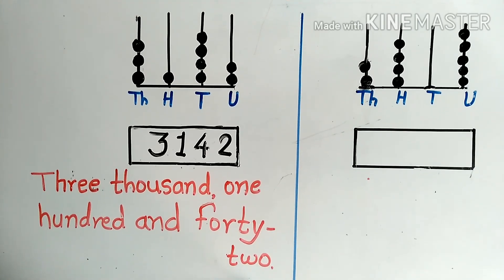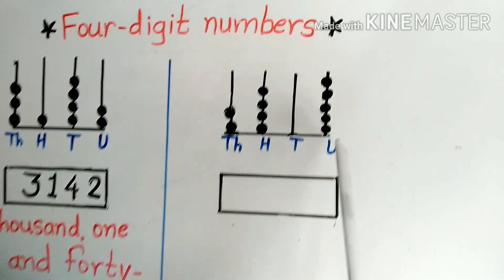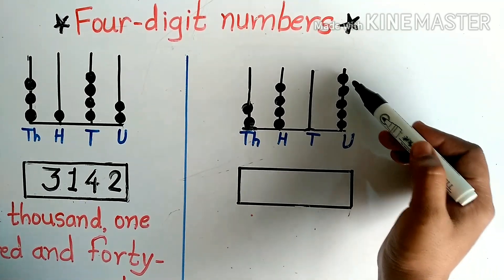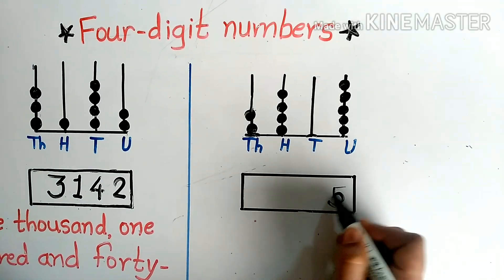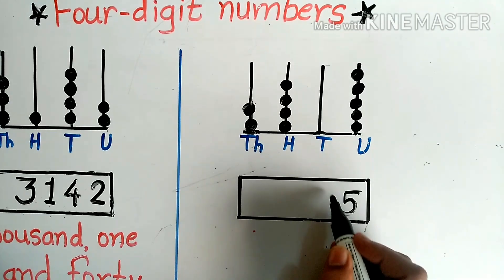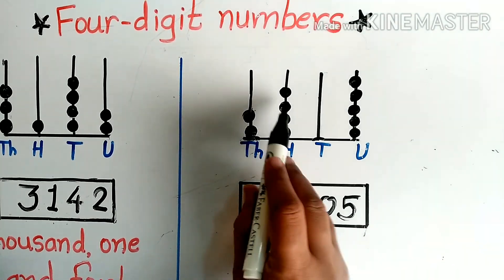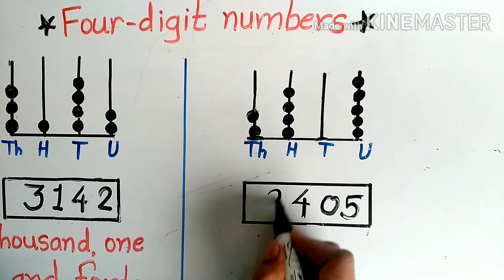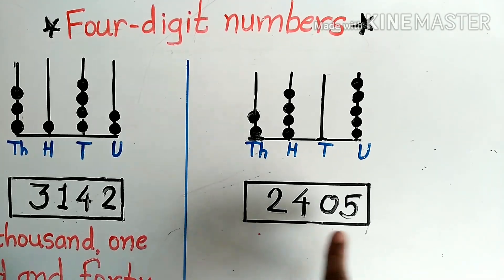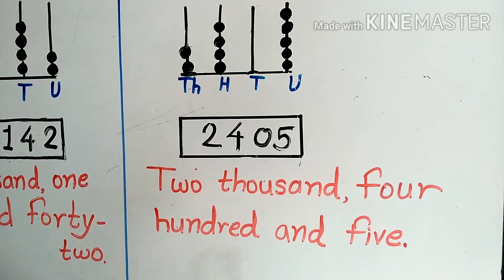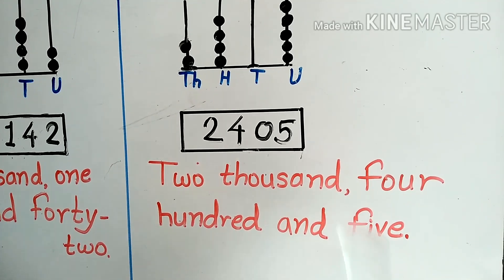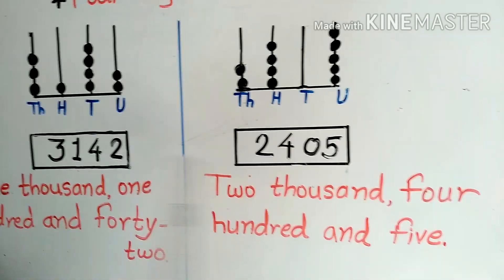I will also write 3142 in words. Both 3142 and 2405 are four-digit numbers. In the number 2405, the units, tens, hundreds, and thousands places are filled accordingly. Both these numbers are examples of four-digit numbers.